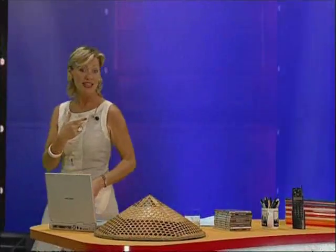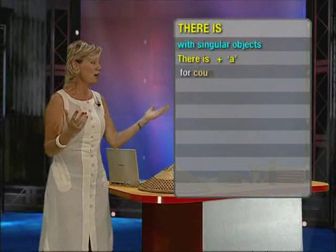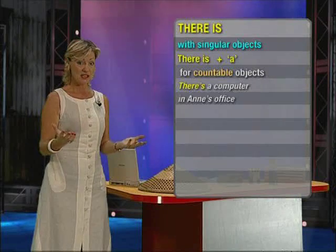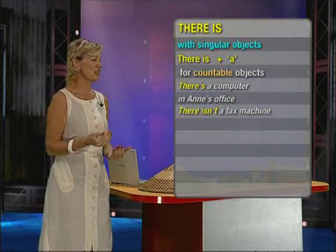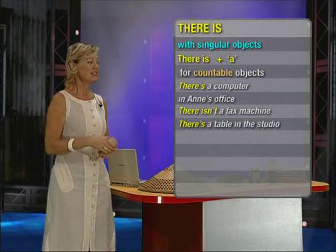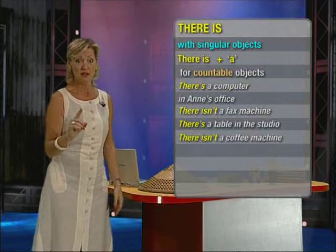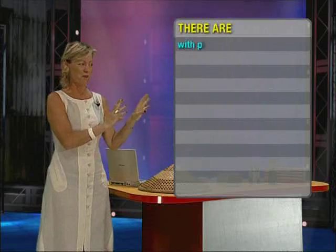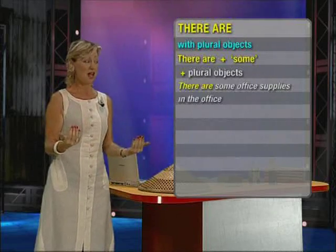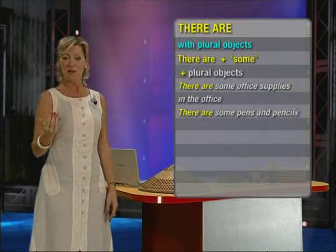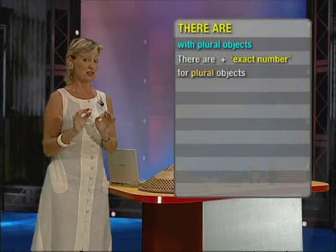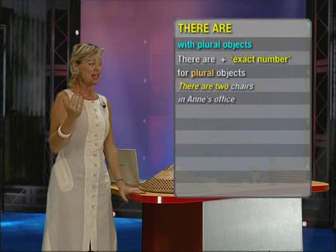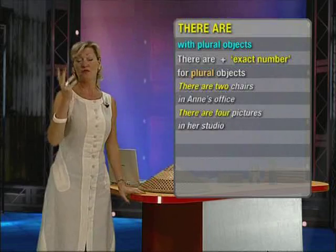Let's go and look at that on the screen. With singular objects, we say 'there is'. For example: 'there is a computer in Anne's office', 'there isn't a fax machine' — that's the negative — 'there is a table in the studio', and 'there isn't a coffee machine', which Peter can't believe. Now look at the plural form: 'there are some office supplies in the office', 'there are some pens and pencils'. We also use it for exact numbers, like 'there are two chairs in Anne's office' and 'there are four pictures in her studio'.